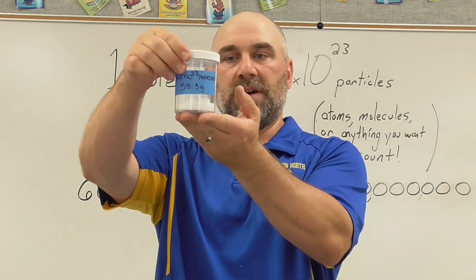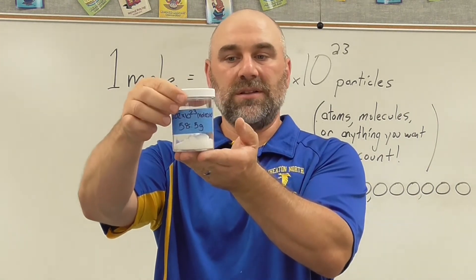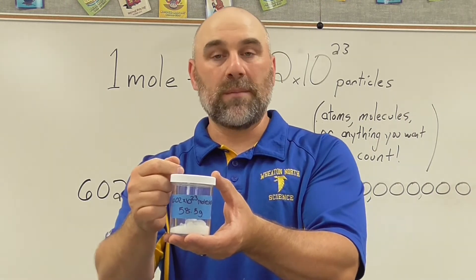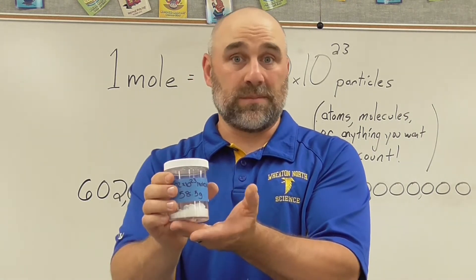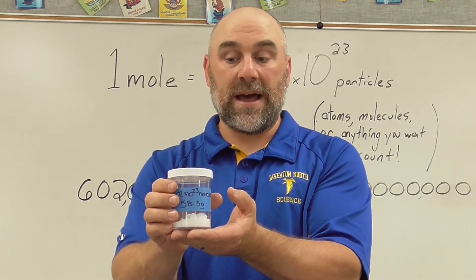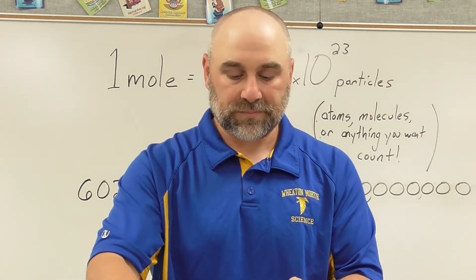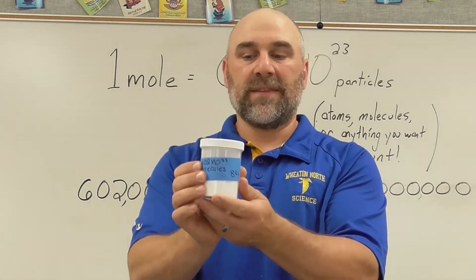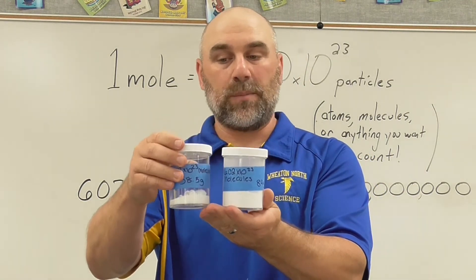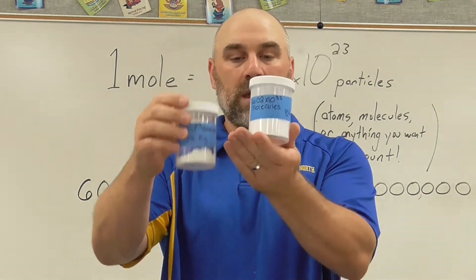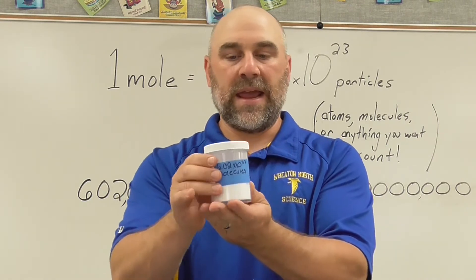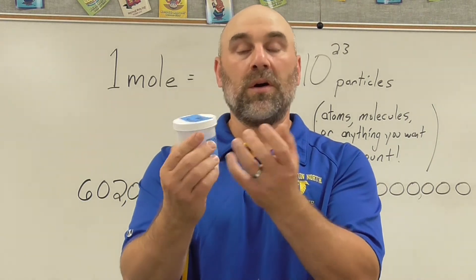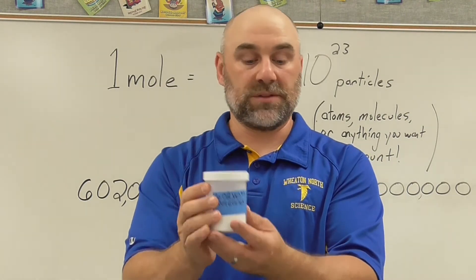Here I have a mole of sodium chloride, or table salt. I would get the mass of this by taking the mass of sodium — a mole of sodium atoms — plus the mass of a mole of chlorine atoms, or chloride ions. Here I have sodium bicarbonate, again a mole of a compound. These two are both ionic compounds — a metal and a non-metal, or cation and anion. Again, this is a mole of those particular types of particles.